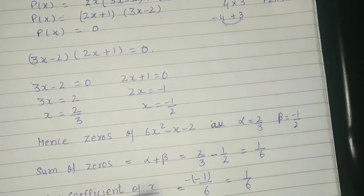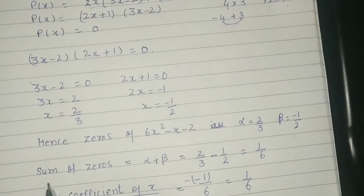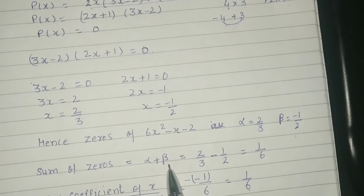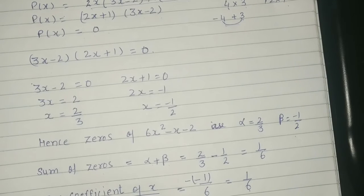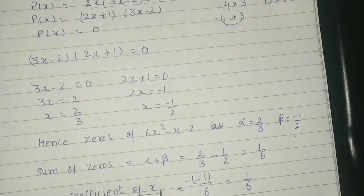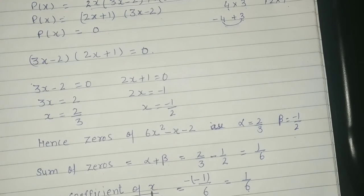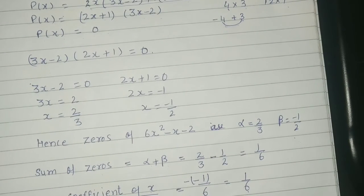So relationship between zeros and coefficients of this polynomial. Sum of zeros, alpha plus beta, we get 1 upon 6. And sum of zeros equals negative coefficient of x divided by coefficient of x squared. So putting the values, minus 1 upon 6, we get 1 upon 6.